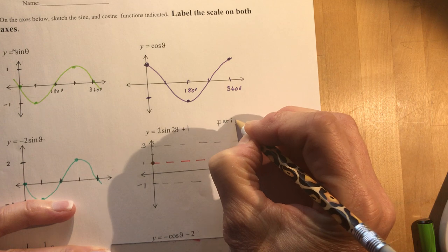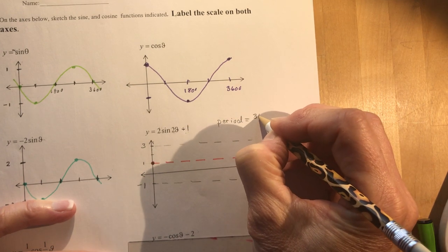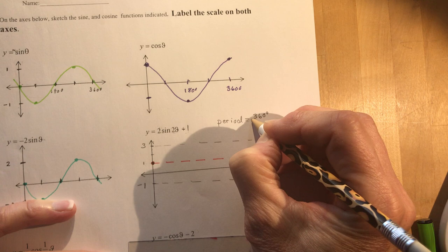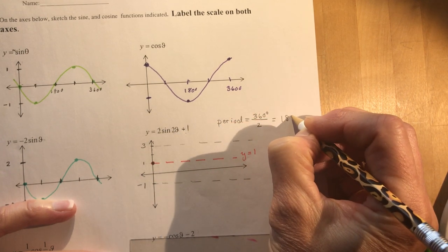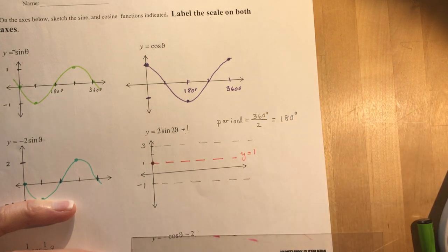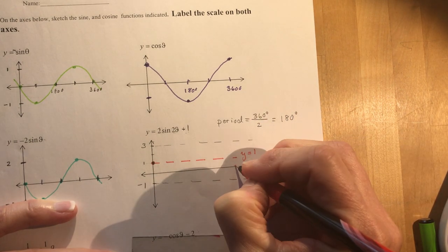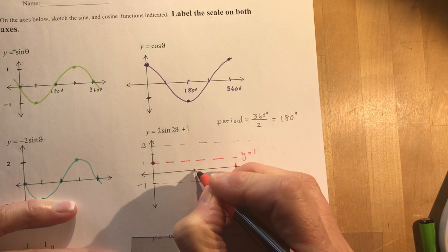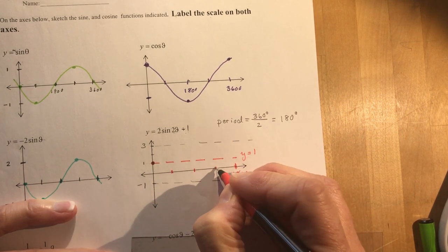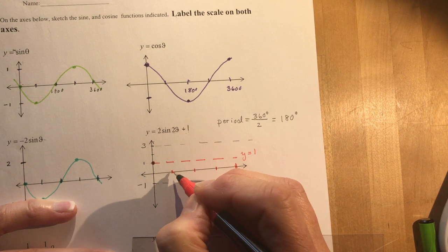Period is 360 degrees divided by K, divided by two, that gives me 180 degrees. So I want this one complete cycle in 180 degrees. I divide it in half, divide those in half again.